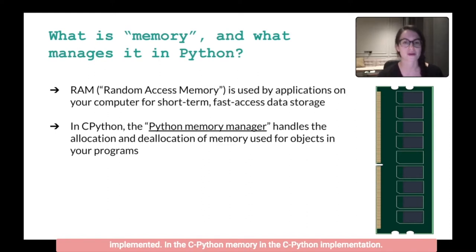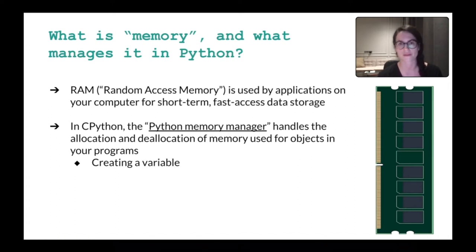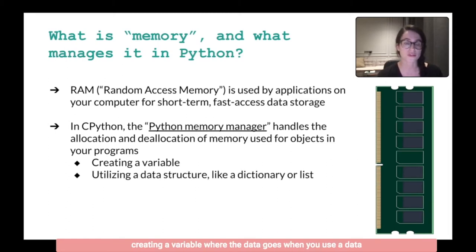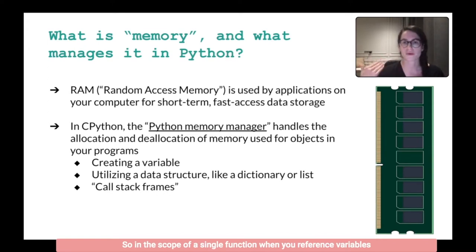In the CPython implementation, the Python memory manager is the part of the code that handles allocation and deallocation of memory used for objects in your programs. More specifically, it handles creating a variable, where the data goes when you use a data structure or put things in a dictionary or a list, and also using a call stack frame — so in the scope of a single function, when you reference variables and use data structures, and then you return it, and they all go away.